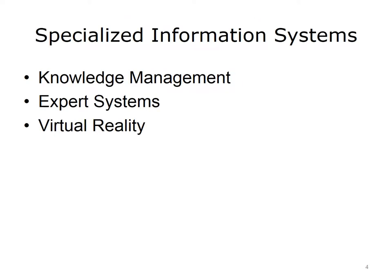There are many specialized information systems employed by business, science, and medical institutions. Knowledge management systems attempt to generate and report knowledge in addition to data and information. An example of a knowledge management system would be a system collecting medical journal articles. Expert systems use artificial intelligence and knowledge to provide solutions to problems.